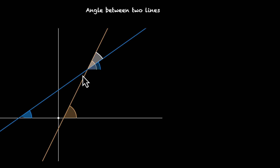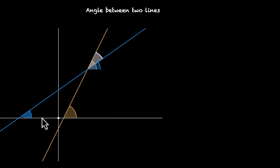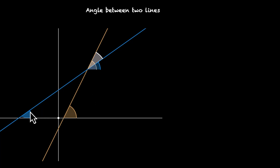Now before we look at the point of intersection, let's look at one of these lines — the blue line. It's already making an angle with one other line, and that's our x-axis. We've defined it like this: the angle made by this line with the positive x-axis in the anticlockwise direction defines the slope of this line. If that angle is theta, tan theta is the slope of this line. This angle will also give us the slope of the yellow line.